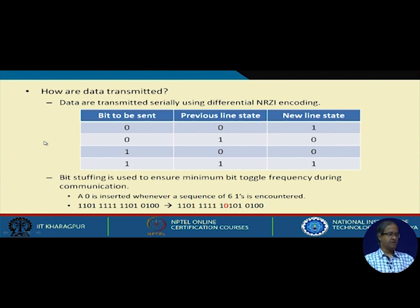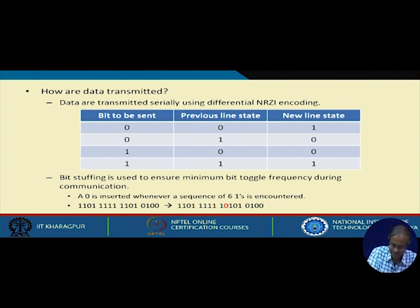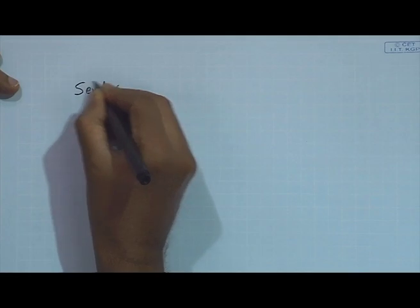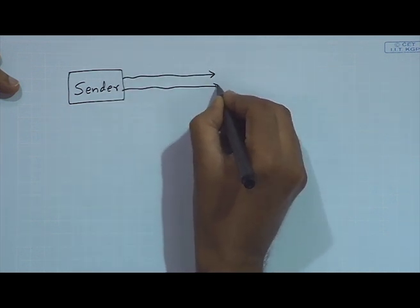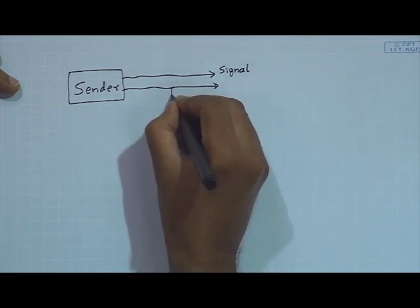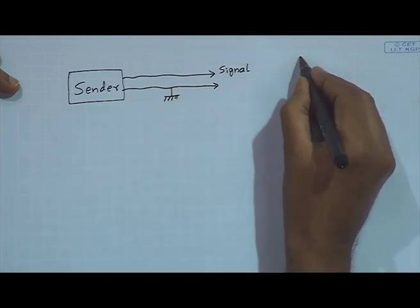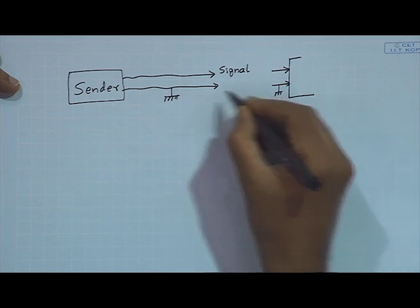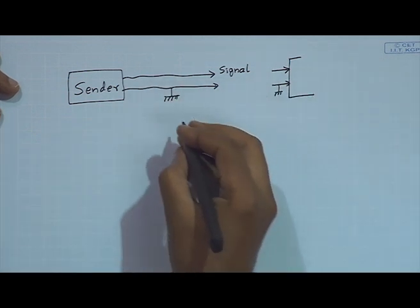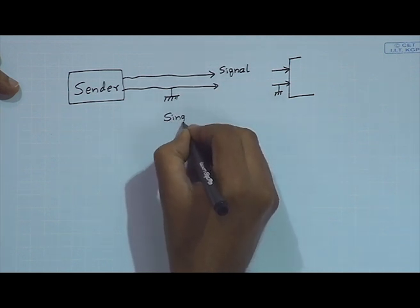USB is a serial bus standard — data are transmitted serially. It uses differential NRZI encoding. In a single-ended connection, you carry the signal and connect it to the receiver with a proper ground reference. The receiver must know which line is the signal and which is ground.